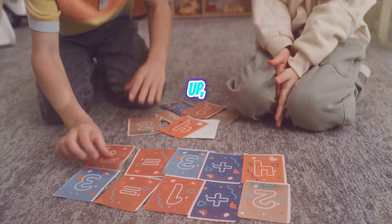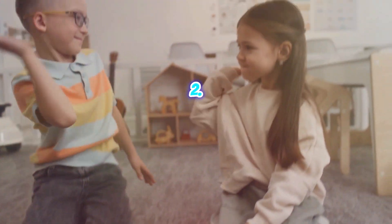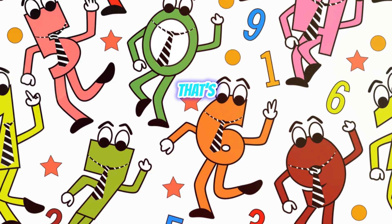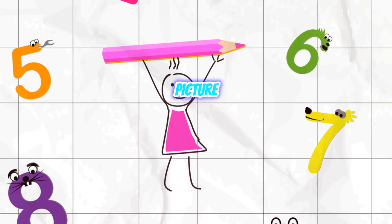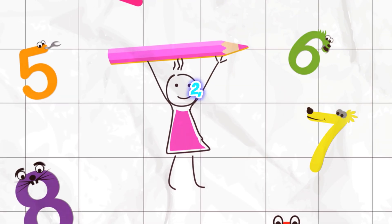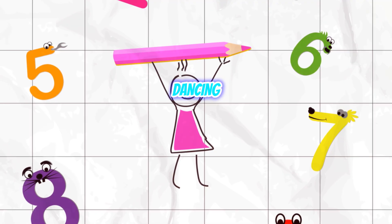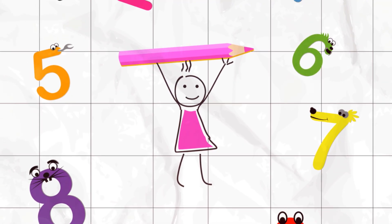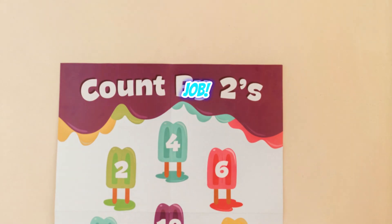First up, one times two. That's right, it's two. Picture a happy number two, dancing and twirling. Great job!